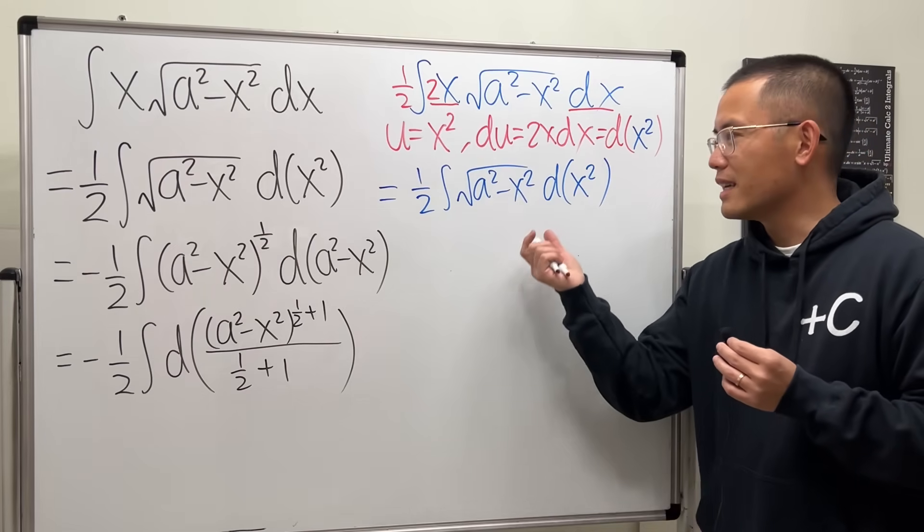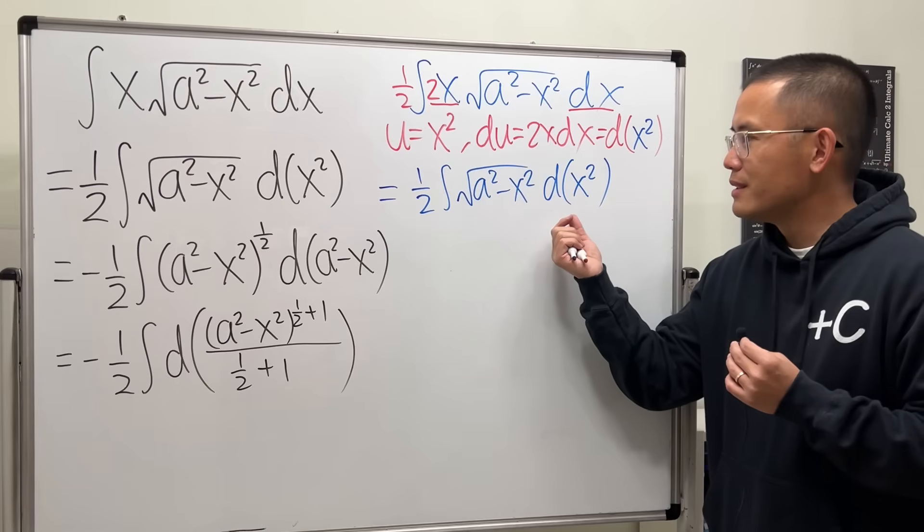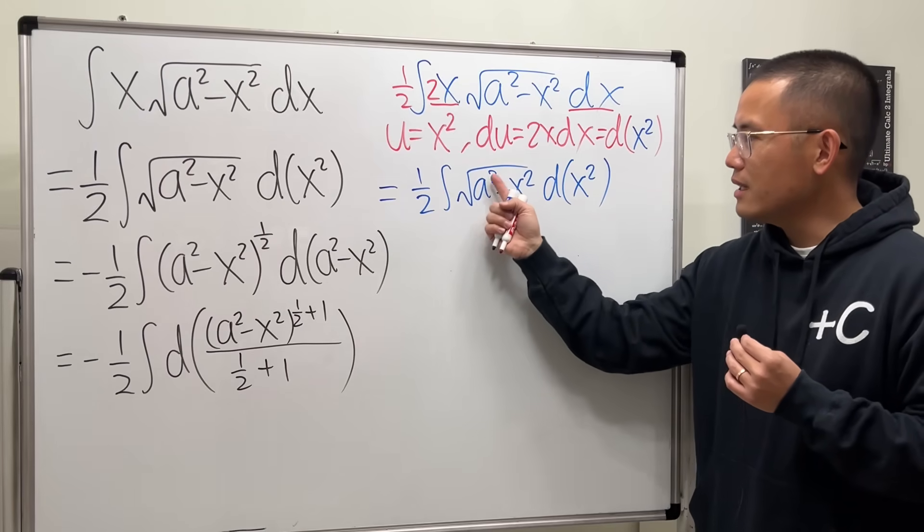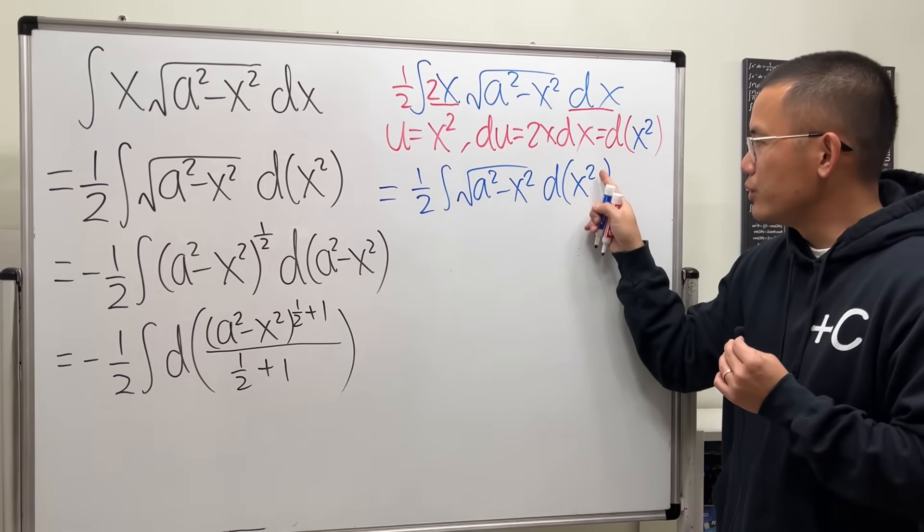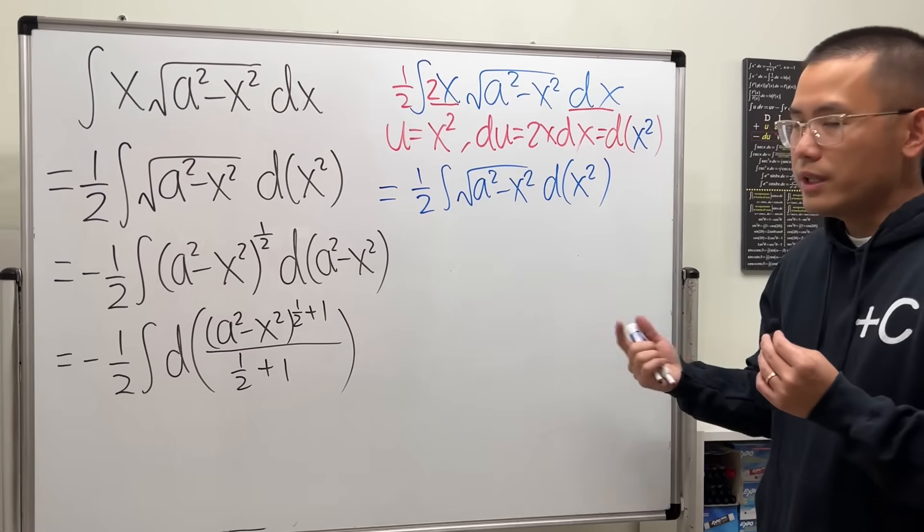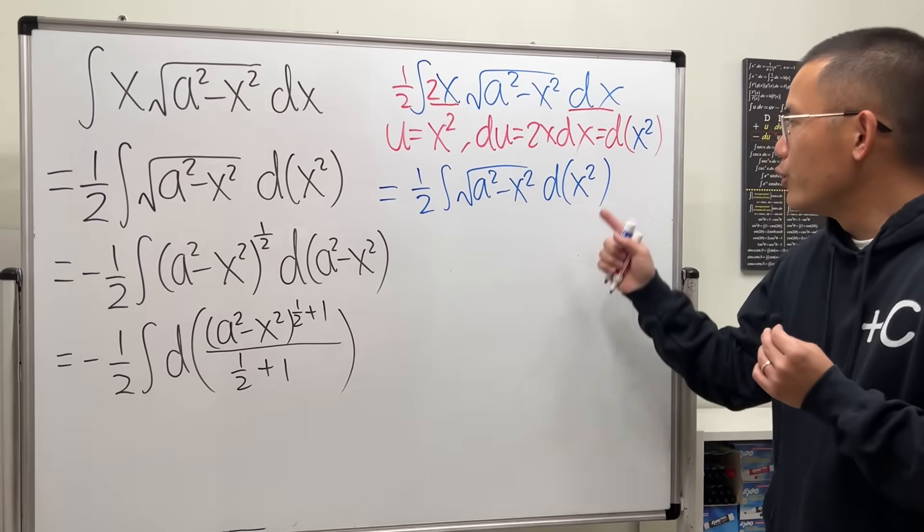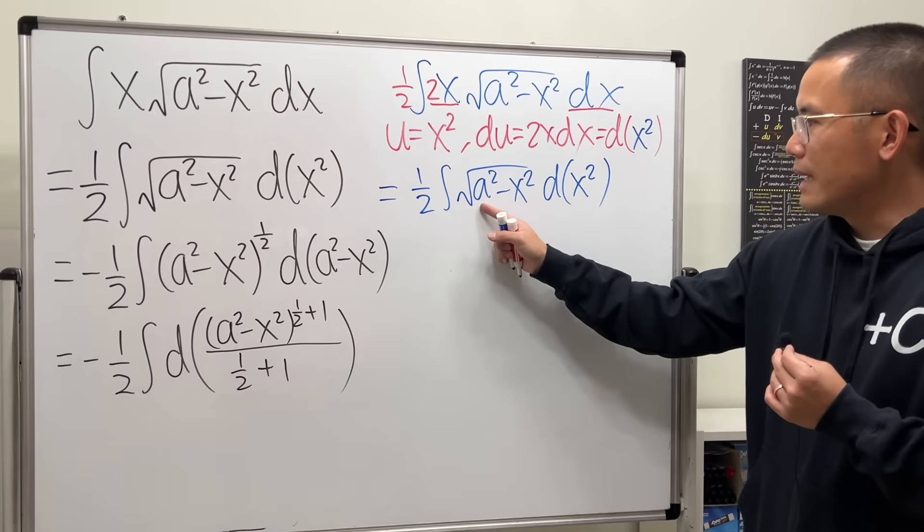So if you think about it as like, we are in the x squared world now, or the u world now, this whole thing is not allowed, because you have to match the whole thing inside. If this is u, we don't want x. Yeah, that's the idea. So what can we do though? Remember, the d is just like to take the derivative. We can easily match it. Have a look.